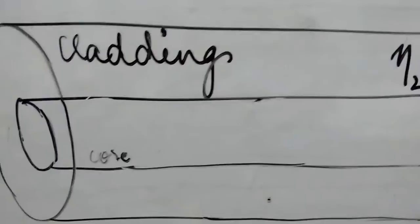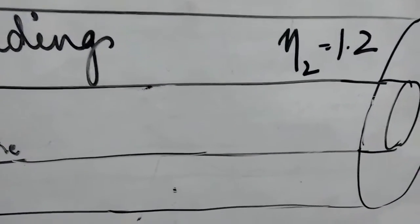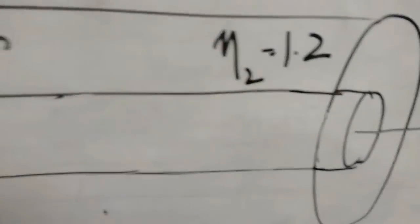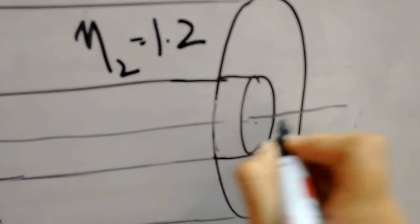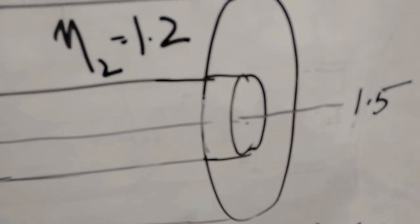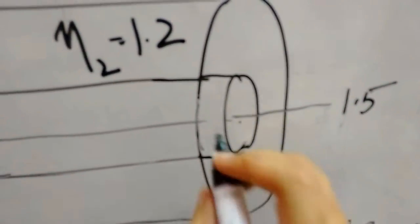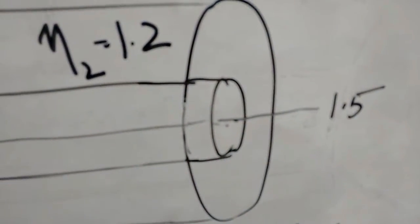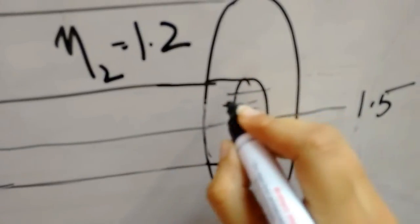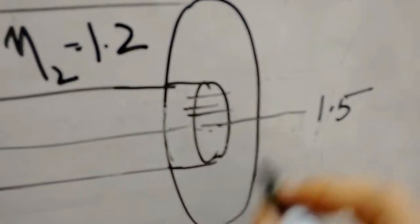The refractive index of the core is not uniform. That is, the refractive index at the center of the core is highest. It takes, let us take 1.5, and it gradually decreases towards the boundary.